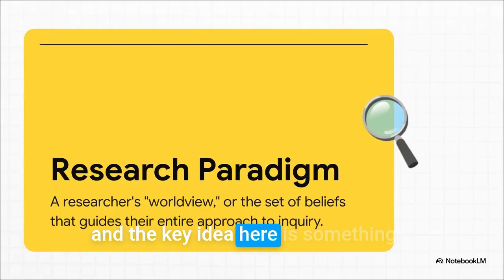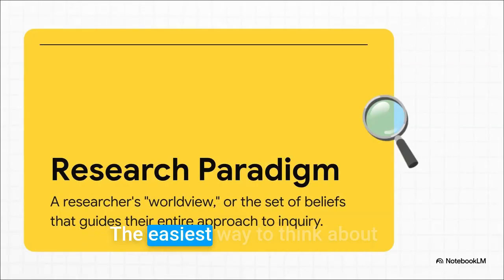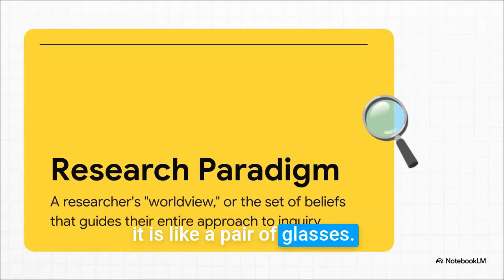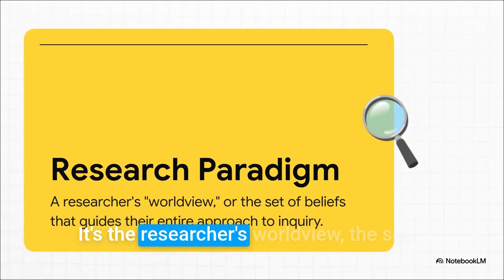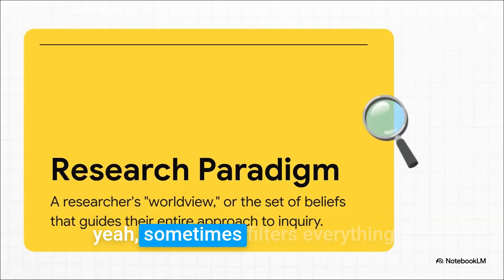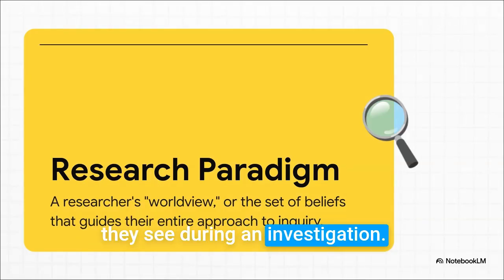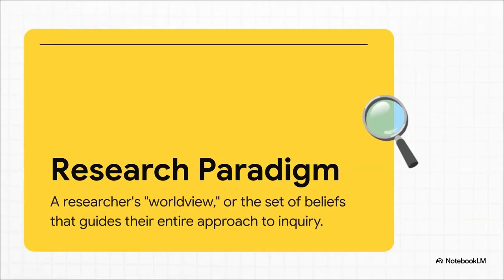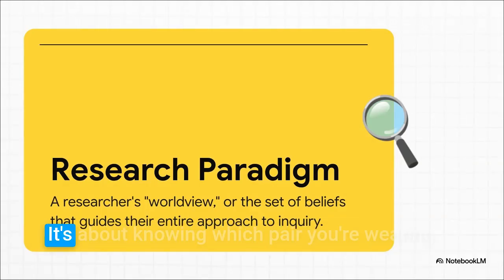We tend to think of research as this totally objective thing, right? You're just out there collecting facts. But what if the researcher's own beliefs, their whole way of seeing the world, are actually steering the ship? What if they're shaping the discoveries from the very beginning? That's what we're digging into today. And the key idea here is something called a research paradigm. The easiest way to think about it is like a pair of glasses — it's the researcher's worldview, the set of beliefs they wear that focuses and, yeah, sometimes filters everything they see during an investigation. This isn't about one pair of glasses being better than another. It's about knowing which pair you're wearing.